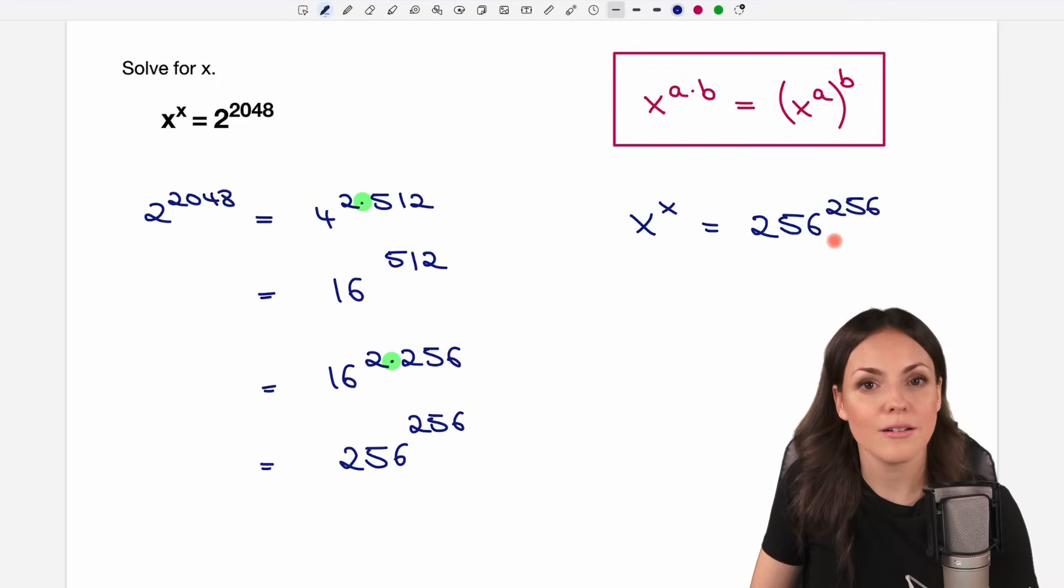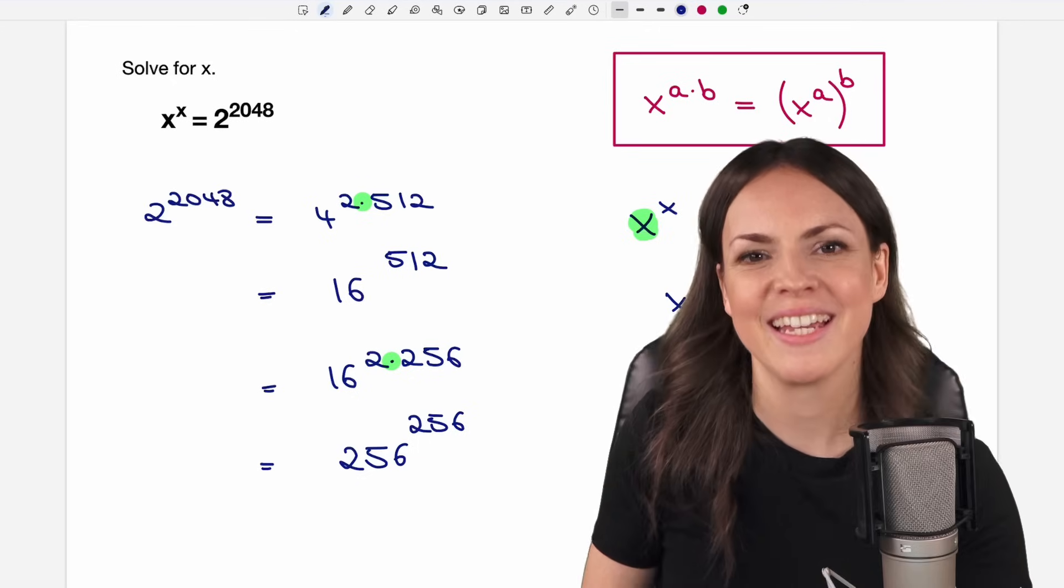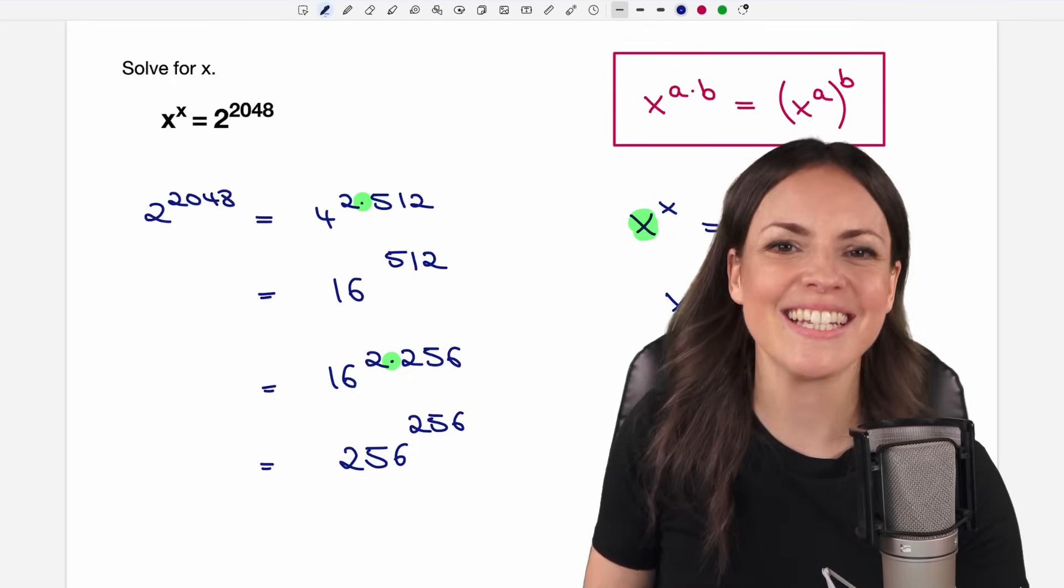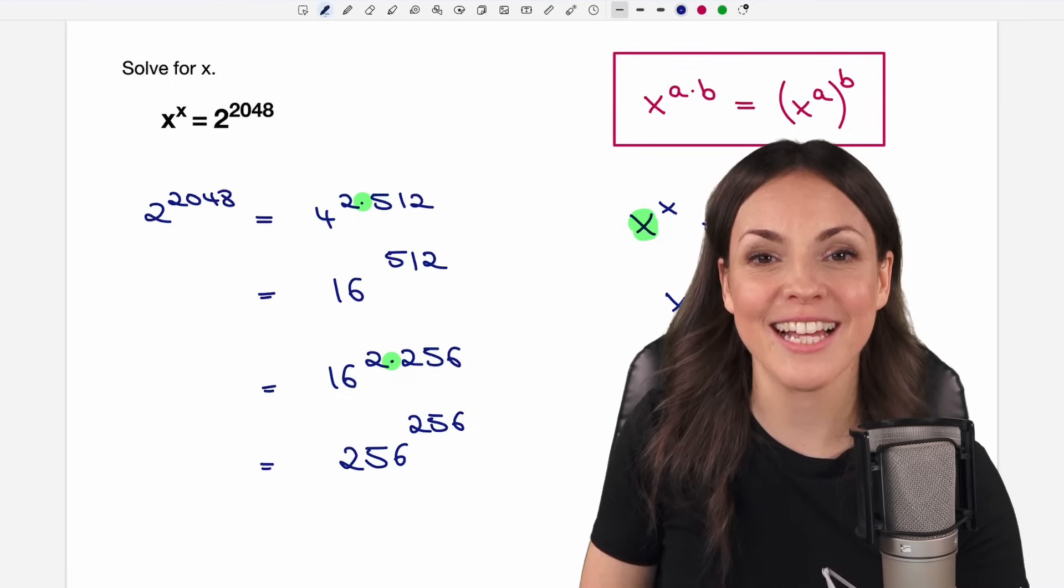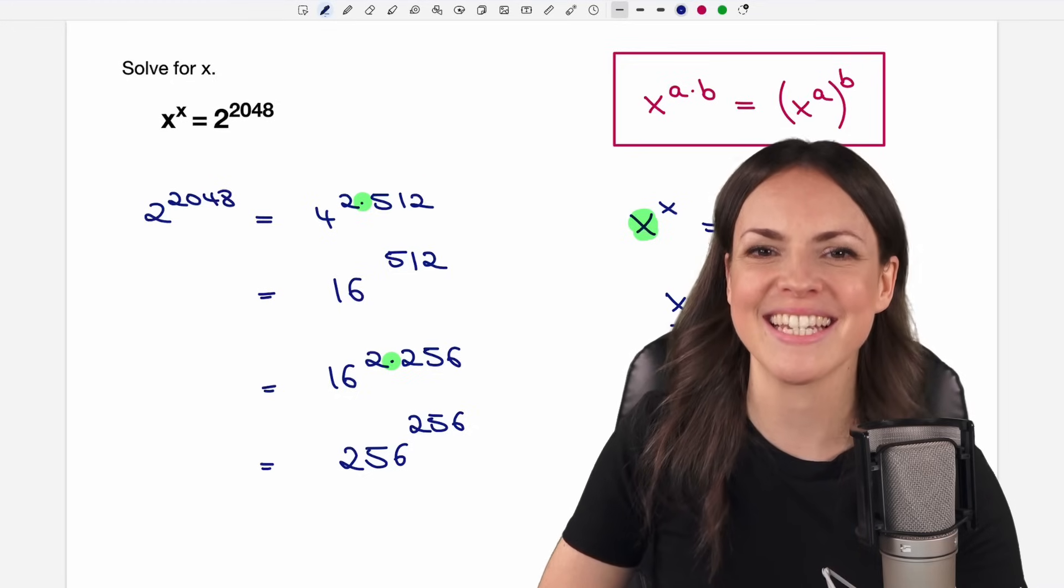Now I can just compare these two sides. My x is just the 256. And so that is one way to solve this equation. I'm curious how you did it, so please let me know in the comments. If you like this video, please give it a thumbs up and we see each other in one of my next videos. Take care!